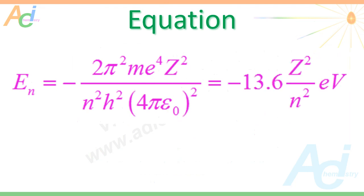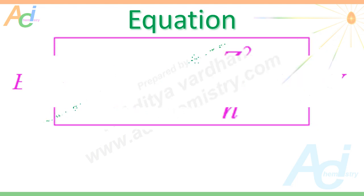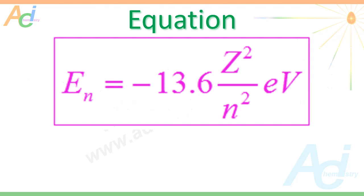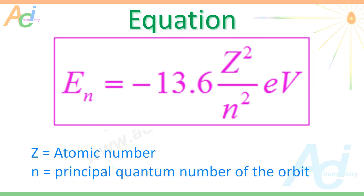We will jump straight into the equation part. Look at this equation — that is the base equation which is used to calculate the energy of the nth orbit in hydrogen atom or any species that is isoelectronic with hydrogen atom. Except Z and N, all other terms are constants. Hence, upon substituting the values for constants, we arrive at minus 13.6 Z² divided by N² electron volts. This is the shortcut formula for energy of the nth orbit, where Z is atomic number and N is the principal quantum number of the given orbit.